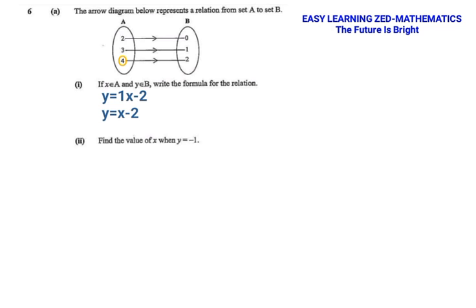Now let's use that formula to find the answer for question 2, which is: find the value of x when y is equal to negative 1. I'm going to replace y with negative 1, so I write: negative 1 is equal to x minus 2. On the right side of the equation we have not done anything — we've just replaced y by negative 1. Now we're going to put like terms together. Negative 1 and negative 2 are like terms — they are numbers without variables.